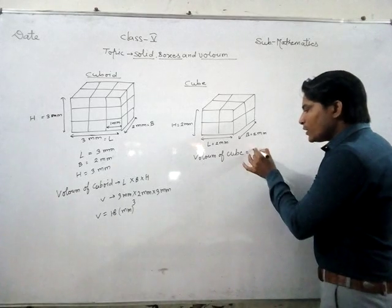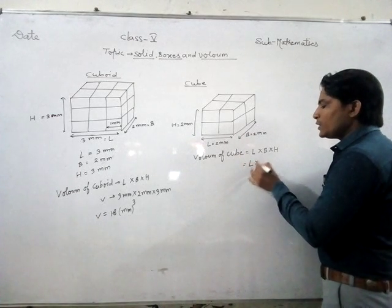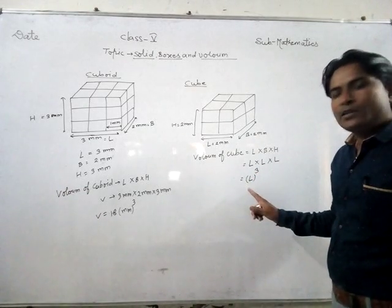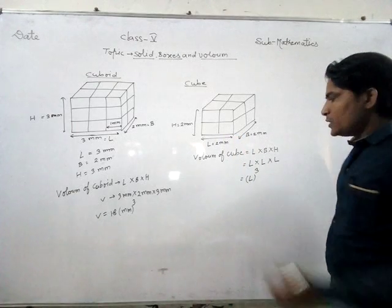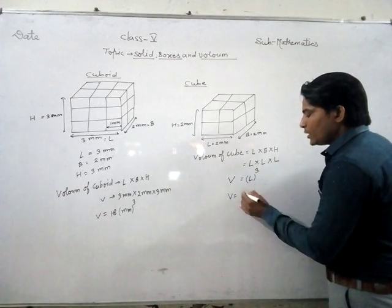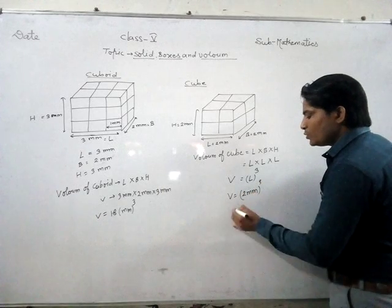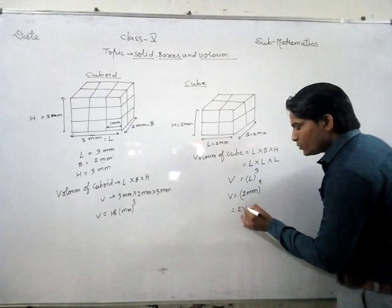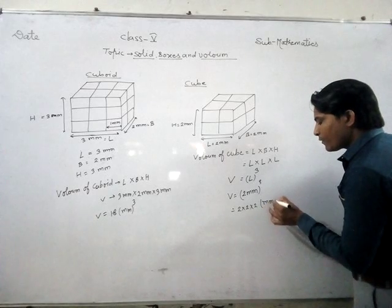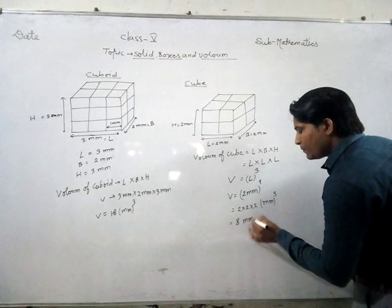Volume of cube is equal to length into breadth into height. But since all sides are equal, we can use length into length into length, which means length cubed — L into L into L. That is the length cube, meaning one side cubed is equal to its volume. So here L equals 2 mm. So 2 mm cube means 2 multiplied by 2 multiplied by 2, and we use mm cube. So 2 into 2 into 2 gives 8 mm cube.